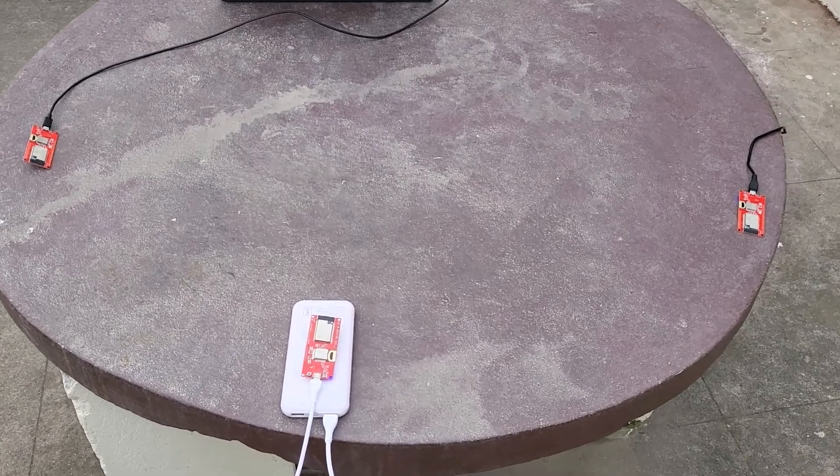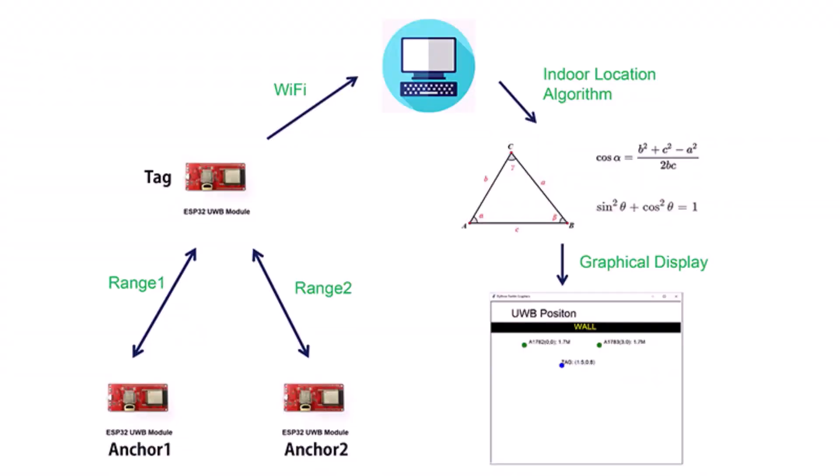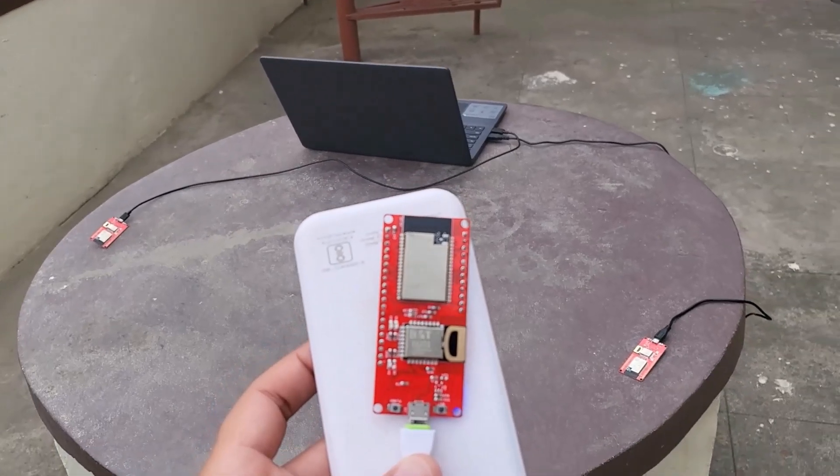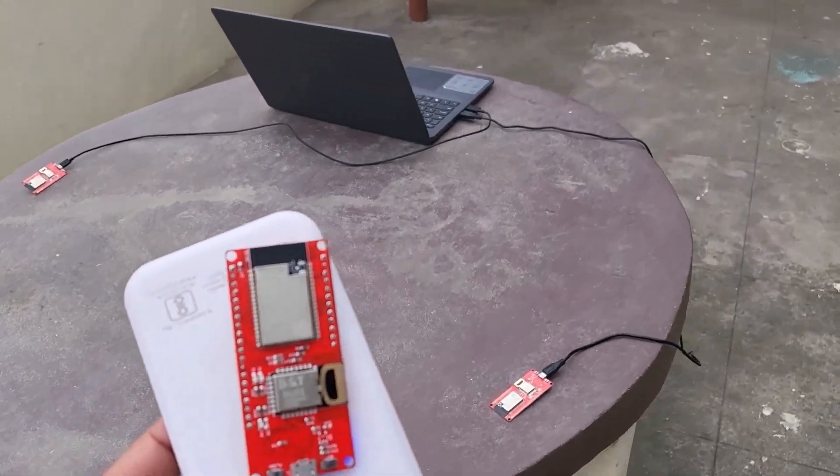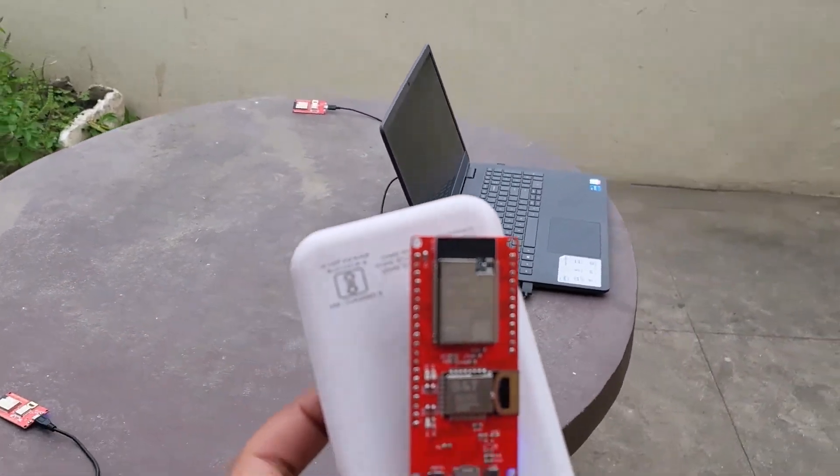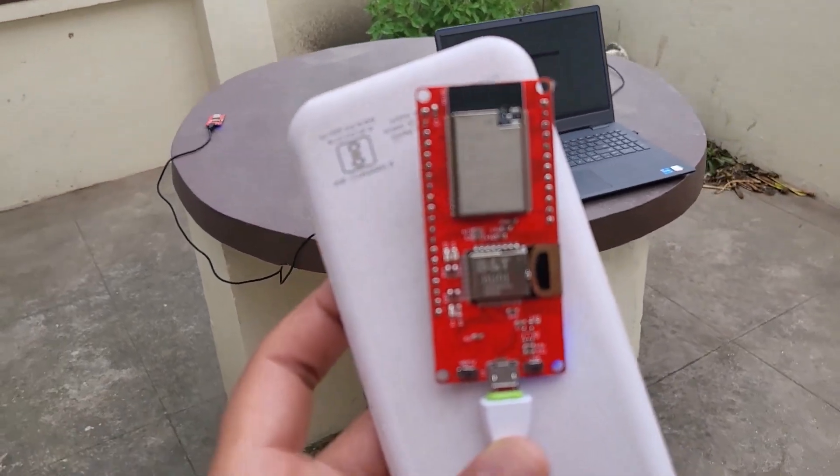For this, we'll use three modules. Out of these three modules, two of them will act as device anchors and the third one will act as a device tag. Both of the anchors are stationary and placed at a fixed distance. The tag is the moveable part of this project.